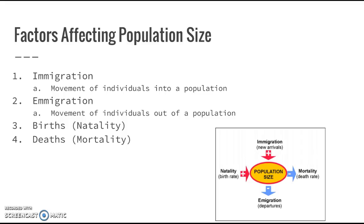Now that you've thought about that, we're going to talk about the four main things. The four main factors affecting population size are immigration, emigration, births, and deaths. Immigration is the same as human immigration — it's the new individuals that move into the population. That's the exact opposite of emigration, which is the movement of individuals out of the population.